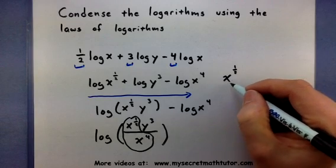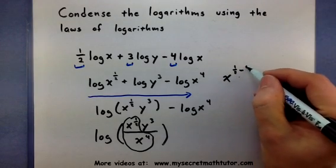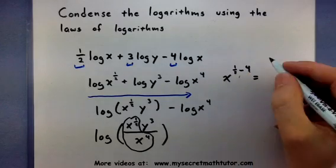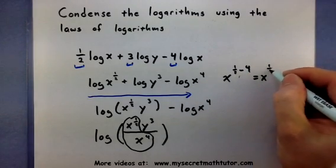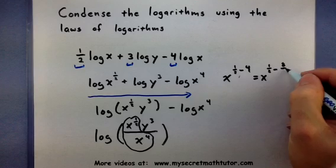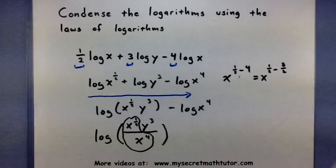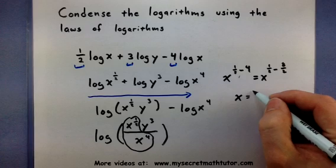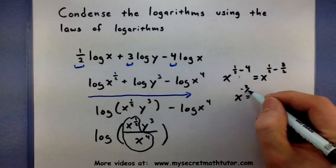let's see, minus the 4. This would be x to the 1 half minus 8 halves, or just x to the negative 7 halves.